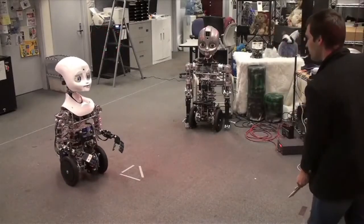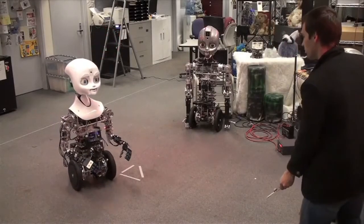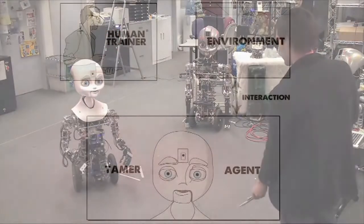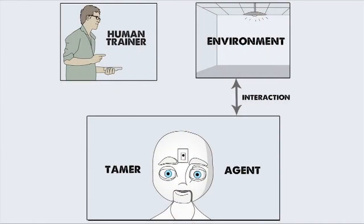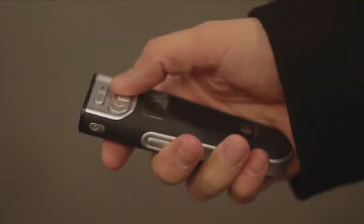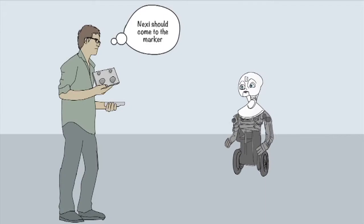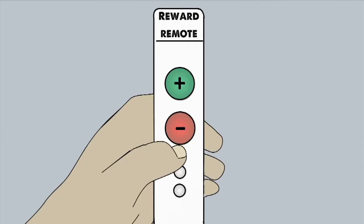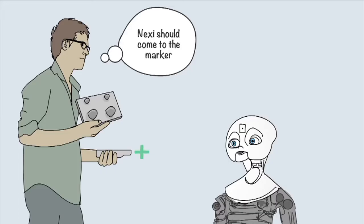Each time the agent takes an action in some state, that experience is temporarily saved for learning. As the agent acts, positive and negative reward is given with inherent delay by a human trainer, here via a handheld remote. Over time, the agent learns to take actions that will get it the most positive reward.